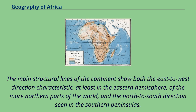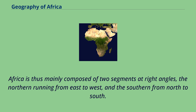The main structural lines of the continent show both the east-to-west direction characteristic, at least in the eastern hemisphere, of the more northern parts of the world, and the north-to-south direction seen in the southern peninsulas. Africa is thus mainly composed of two segments at right angles, the northern running from east to west, and the southern from north to south.